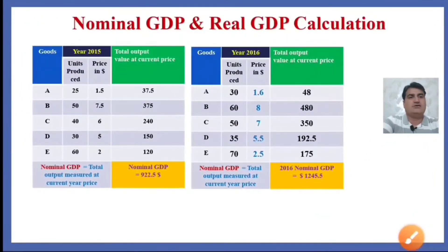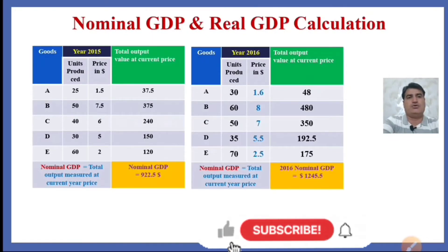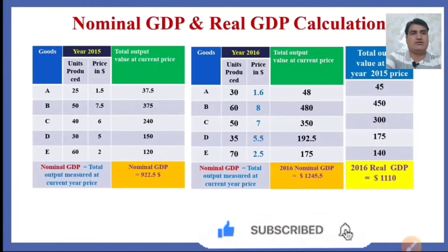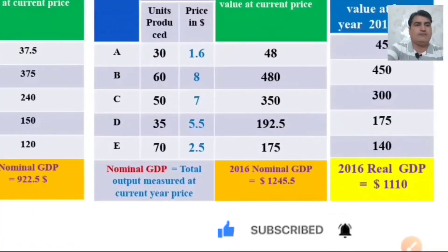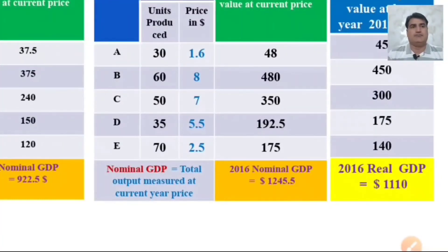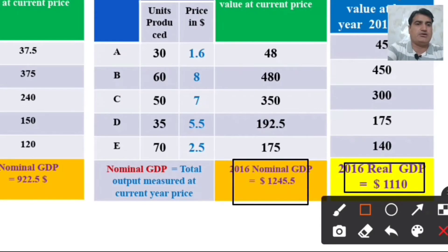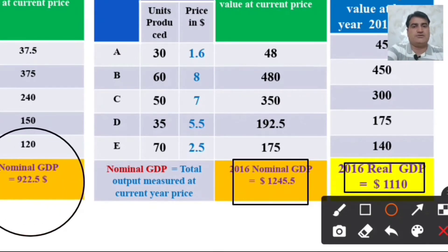If we calculate the total output at base year price — that is, at 2015 prices — that gives us the real GDP. The real GDP for 2016, also calculated in the previous video, is $1,110. So the real GDP for 2016 is $1,110 and the nominal GDP for 2016 is $1,545.5, whereas the nominal GDP for 2015 was $922.5.